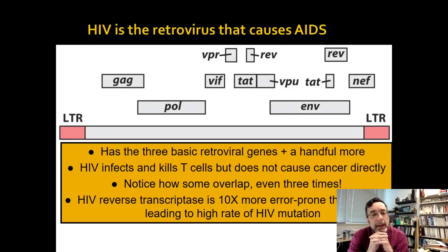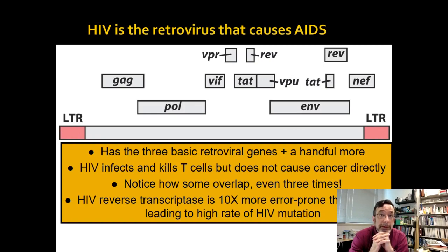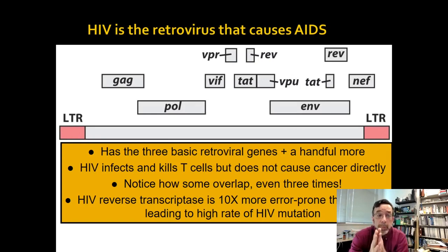HIV has GAG, POL, and ENV genes, plus a few other genes that are important to how it works. It's been studied extensively — it took a while for scientists to be convinced they should study it in as much detail as they should. Now that we have, we know a lot about it that we don't know about other viruses, and that means we have ways to attack it. We've even designed drugs to control it, and those drugs work pretty well.